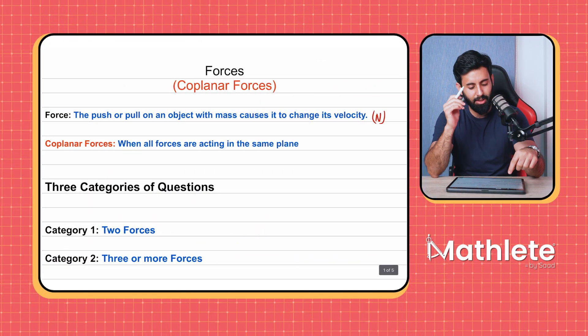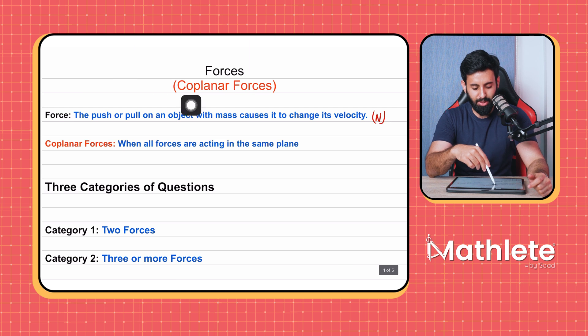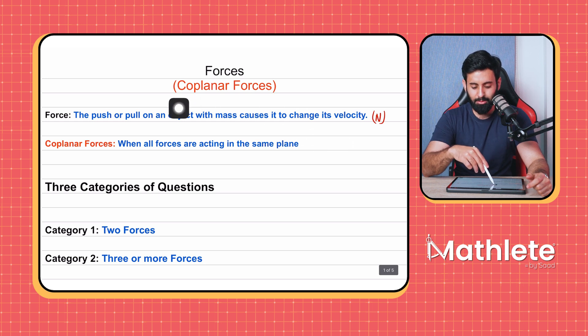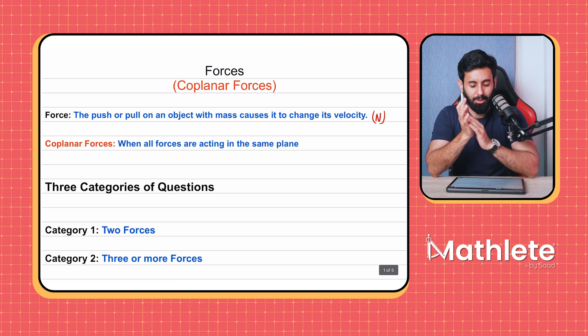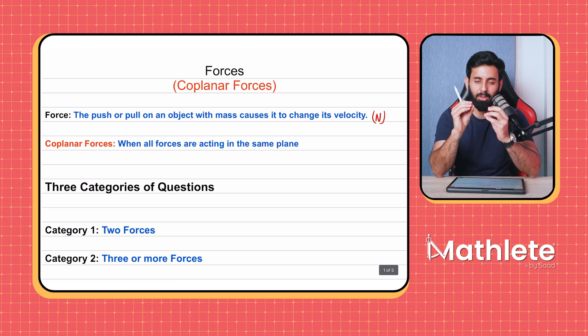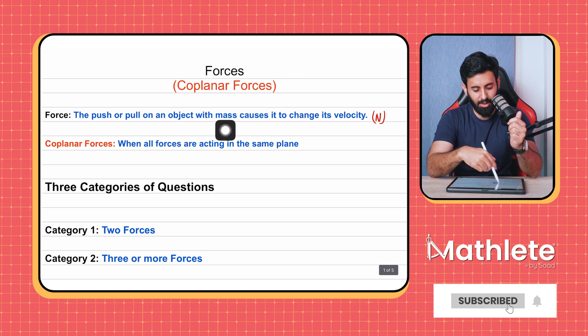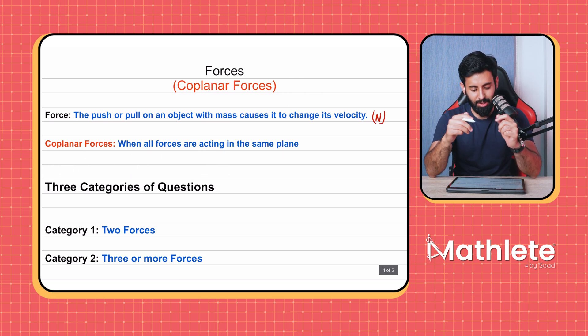The reason why the car is not moving up and down is because it's in equilibrium, and that is something we're going to learn — how to determine whether an object is in equilibrium or not. Now, let's get into the more complex stuff. Force is the push or pull on an object with mass that causes it to change its velocity. We sometimes refer to this topic as coplanar forces because you'll have an object with multiple forces all acting in the same plane, hence the term coplanar forces.